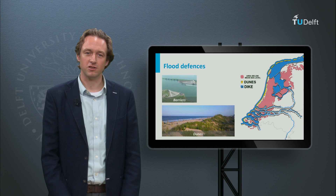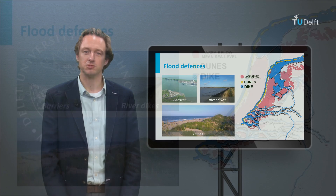Flood defences are structures whose primary objective is to provide protection against flood events along coasts, rivers, and waterways. Examples of flood defences are earthen dikes, sand dunes, flood walls, and storm surge barriers.